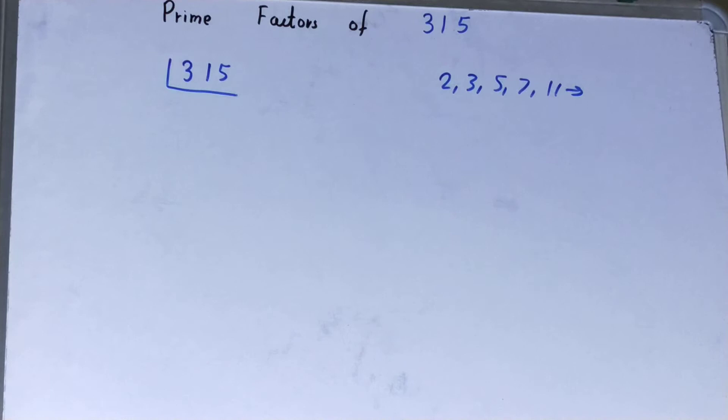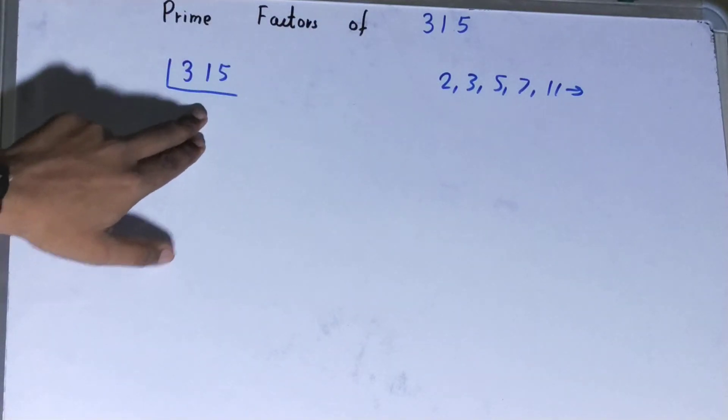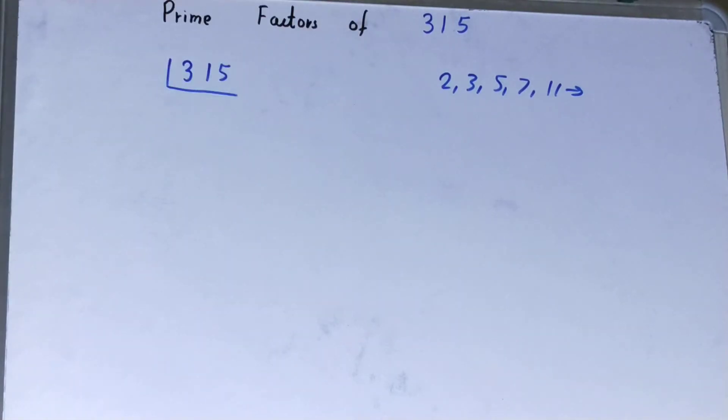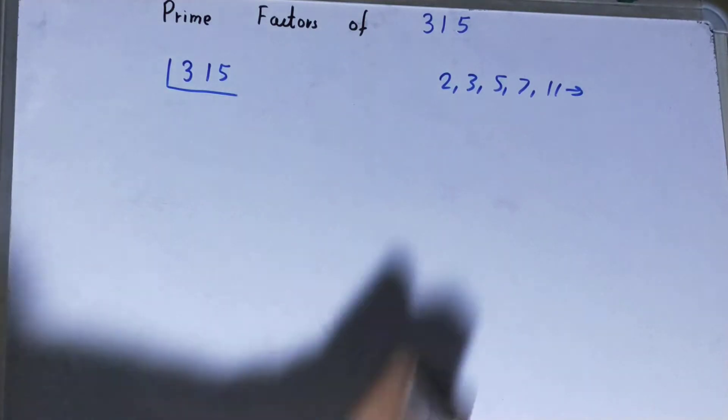We'll start with the lowest prime number we have, that is 2. Is the number 315 divisible by 2? Clearly not, it is an odd number. So we'll go to the next lowest prime number, that is 3.